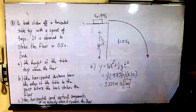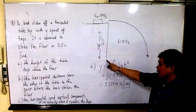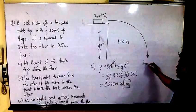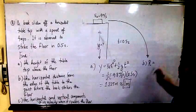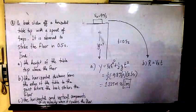In letter B, what is the horizontal distance from the edge of this table to the point where the book strikes the floor? We are looking for the range. The formula for range is V sub X multiplied by time.